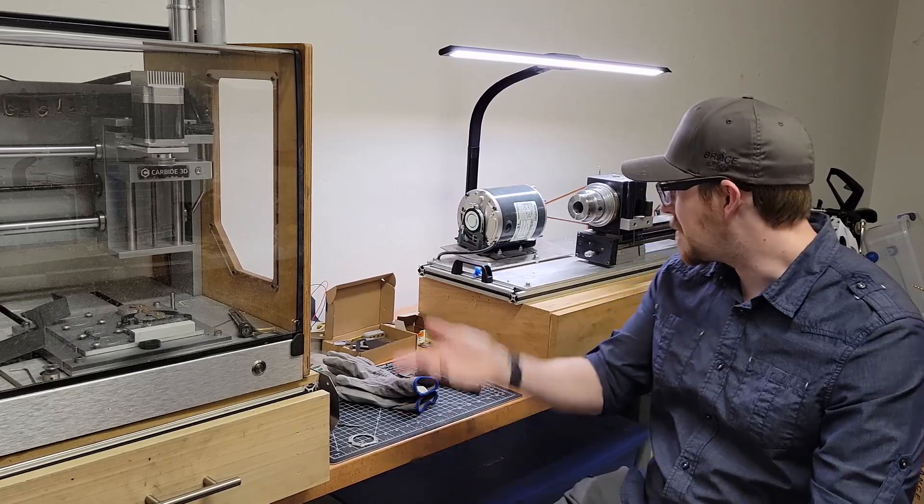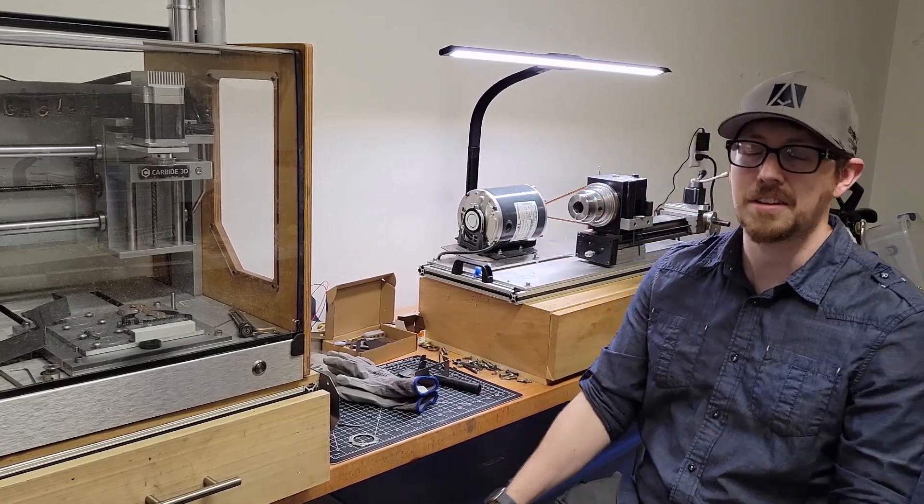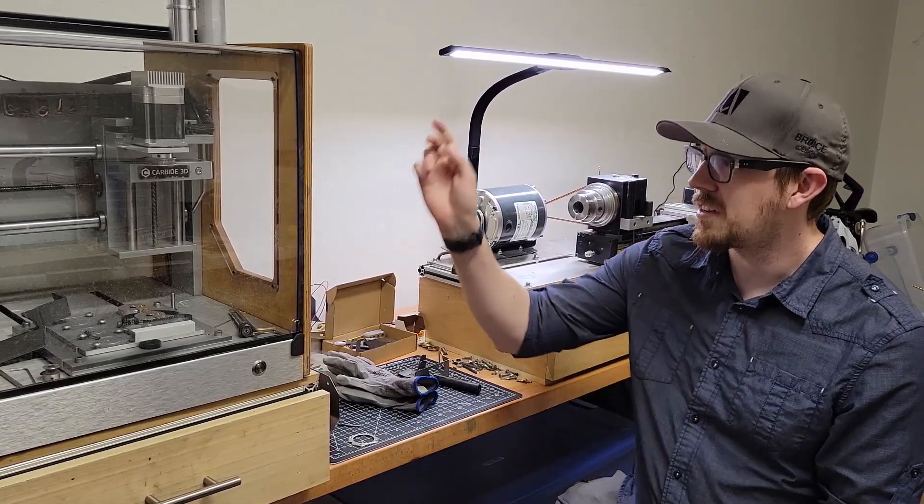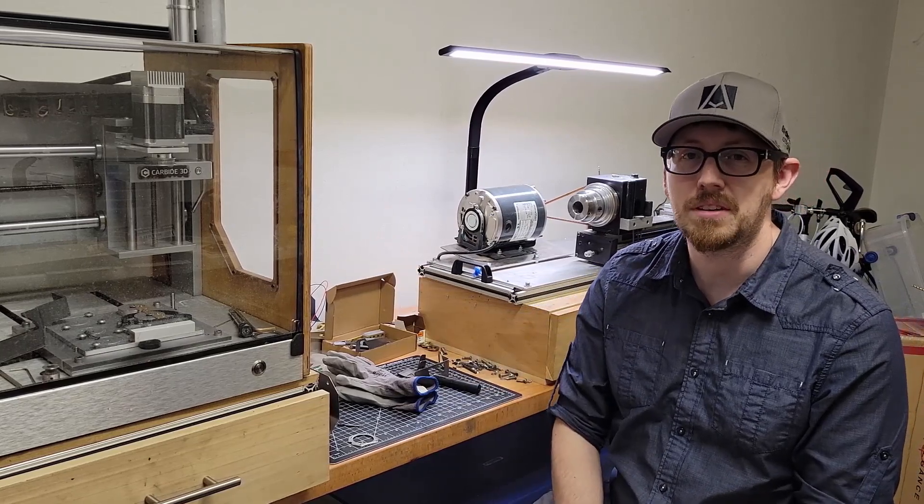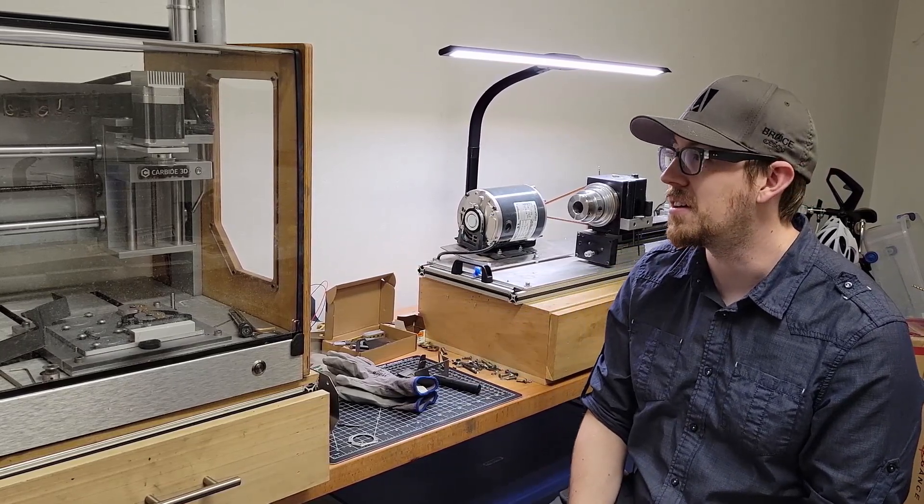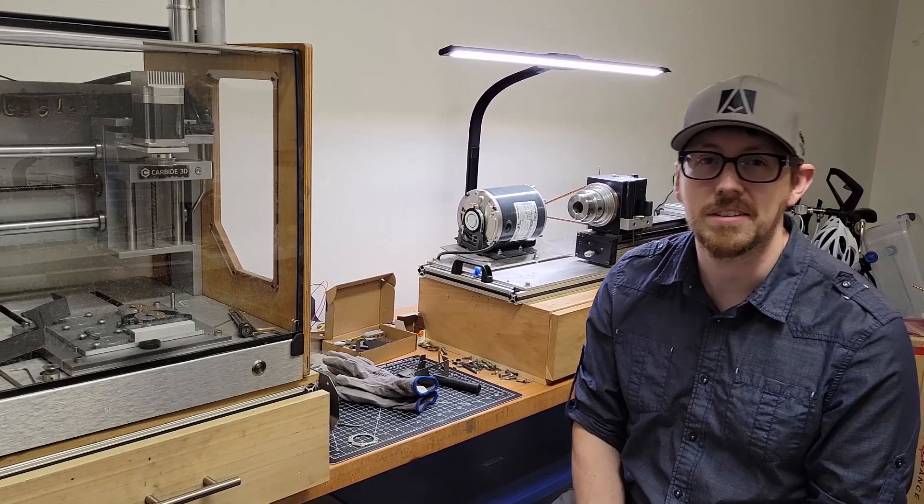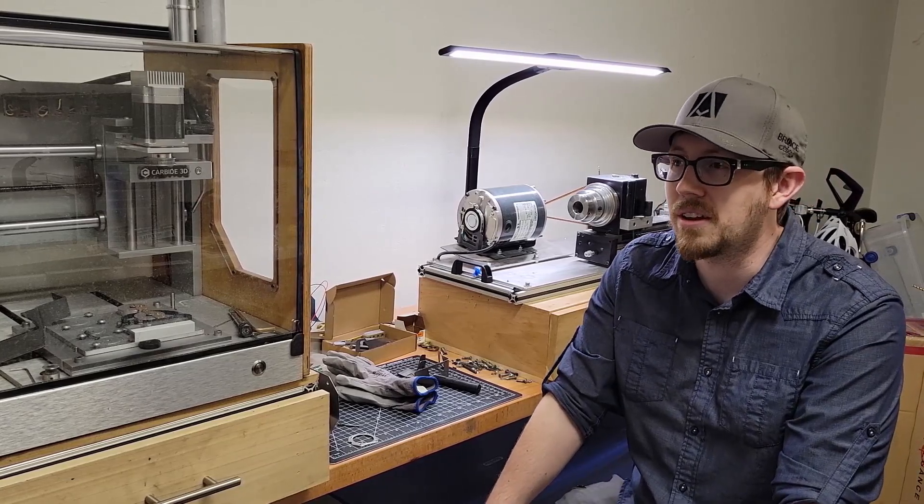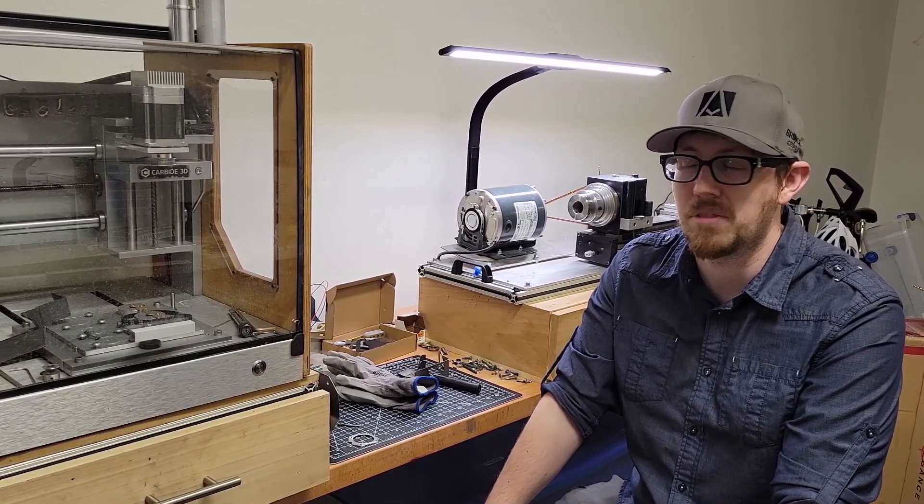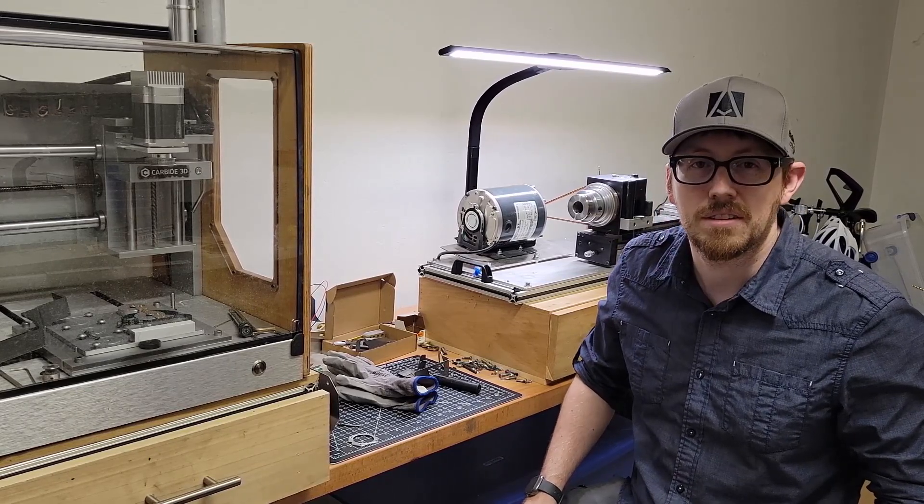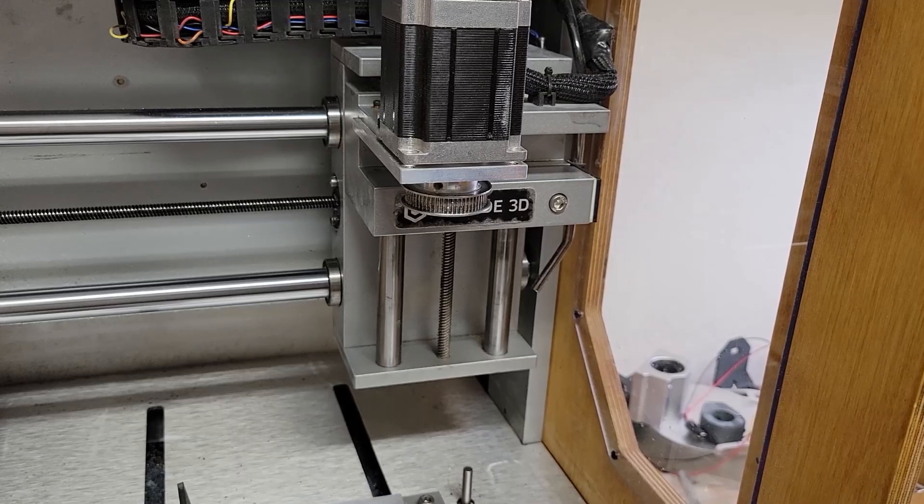Hey everyone, welcome to my tiny little shop space. Today I'm going to be rebuilding the spindle on my little Carbide mill, the Nomad. One of the bearings is completely kaput and I can't get it out, so we're going to just remake it from scratch. Let's do that.